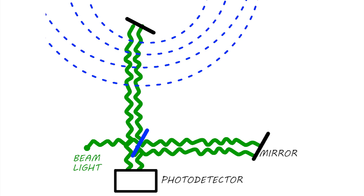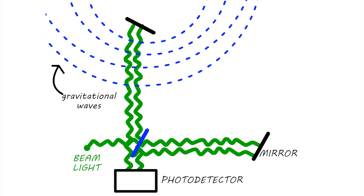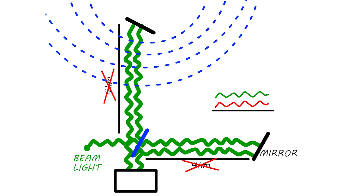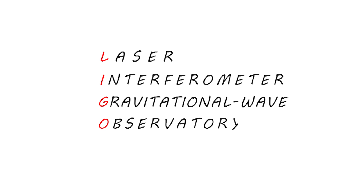But imagine a gravitational wave comes around. The length of the arms changes — because the wave deforms them, if only for fractions of a second — so the light beams take different times to reach the photo detector. Instead of canceling out, they create a much more powerful beam, which is recorded. That's called constructive interference, and that's what happened in the LIGO laboratory, which stands for Laser Interferometer Gravitational Wave Observatory.